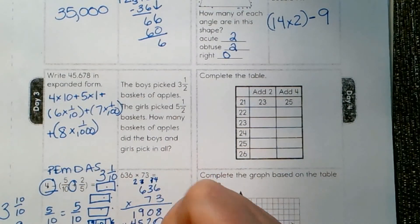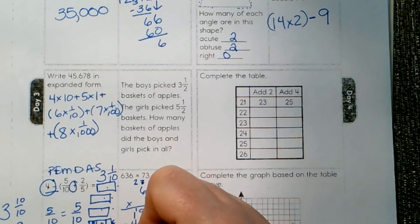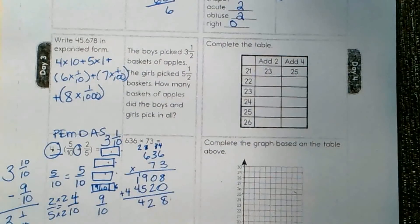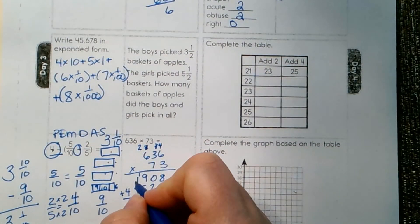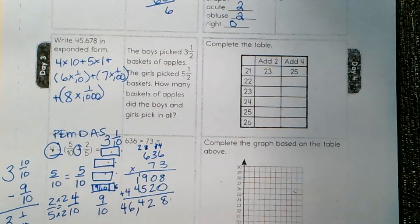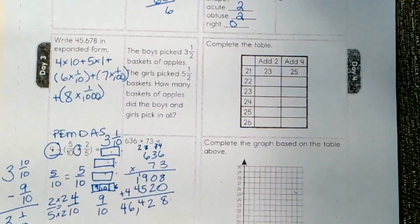So, add it up. 8, 2, 14. Oh, let me see that. There it is. Okay. 4 and 2, 6 and 4. Comma. 46,428. 636 times 73, 46,428. Just checking. Okay.